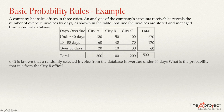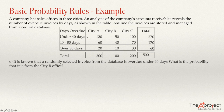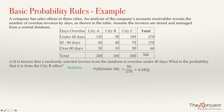It is known that the randomly selected invoice is overdue under 40 days. What is the probability that it is from the CDB office? Since we know it is one of the 270 invoices overdue under 40 days, the denominator is 270. Of those, 50 are from CDB. So P(CDB | under 40 days) equals 50 over 270, which is approximately 0.1852 or 18.52%.